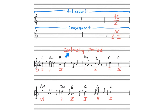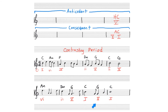Now we have a contrasting period form where the antecedent phrase is significantly different from the consequent phrase. Period forms always have the feeling of a question at the end of the first phrase followed by an answer at the end of the second phrase. The easiest way to have a question is with a half cadence, a five chord. The easiest way to have an answer is with an authentic cadence, five to one.